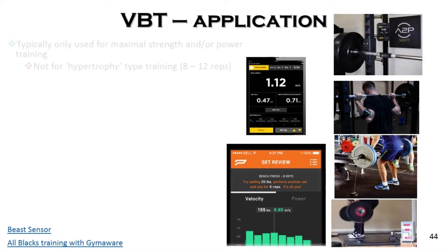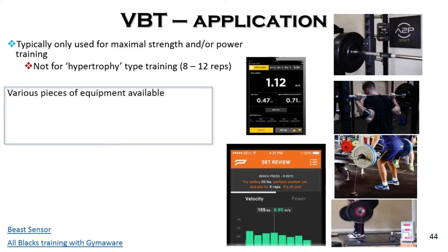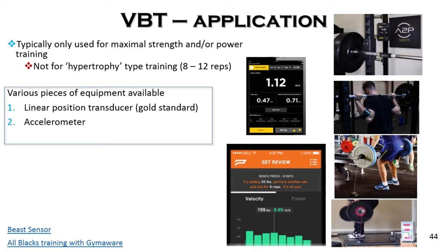Velocity-based training is typically used for maximum strength or power training — people would not generally use it for hypertrophy purposes. To apply it, you need equipment to measure how fast the bar is actually moving. There are two categories of technology: the linear position transducer, considered the gold standard, and individual accelerometers, which are validated against those gold standards.